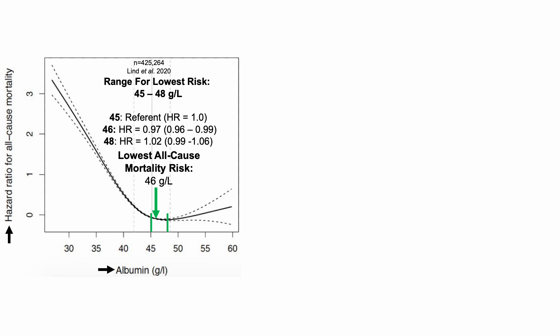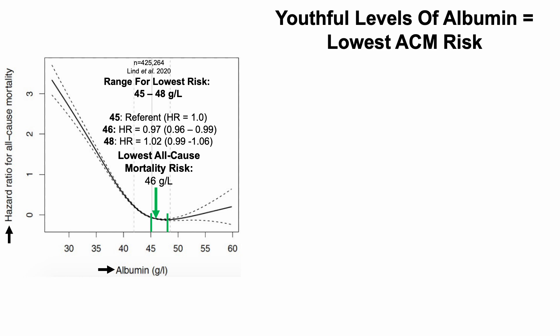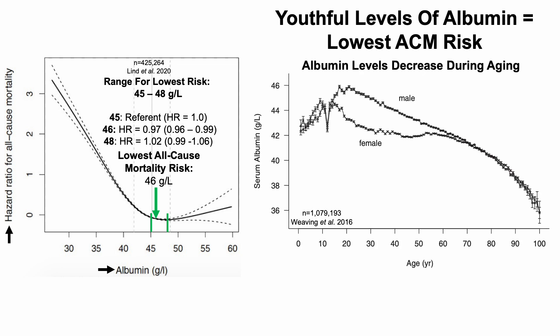There wasn't data for 47, but there was data for 48 in this paper. The hazard ratio is 1.02, but the confidence interval overlaps with 1, indicating that having an albumin of 48 is not significantly different from 45. That leads to the range for lowest risk being 45 to 48 grams per liter. Youthful levels of albumin are equal to the lowest all-cause mortality risk — peak values for women and men are 45 and 46, respectively, which fall into that range.